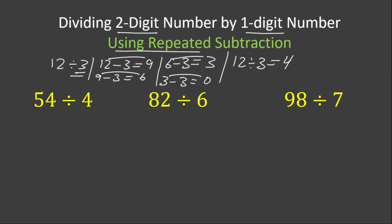The number of times that we subtracted is the result of our problem, or we can say 4 is the quotient of this division problem.